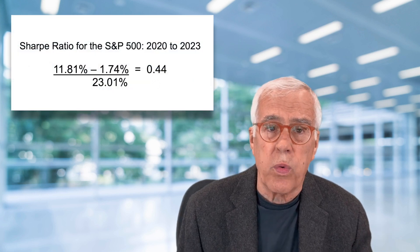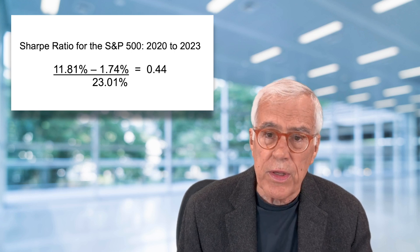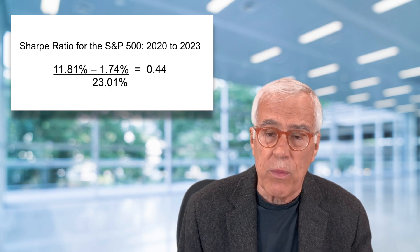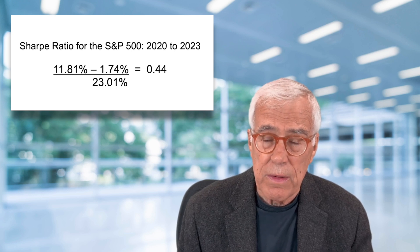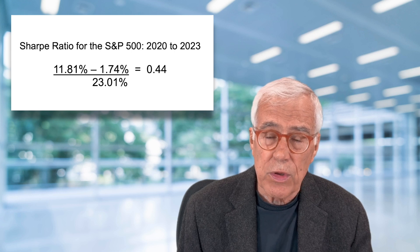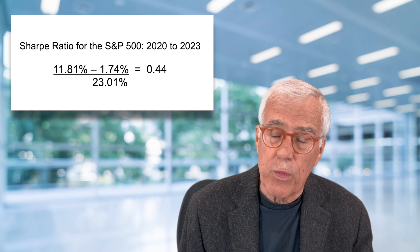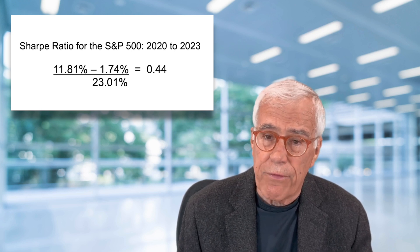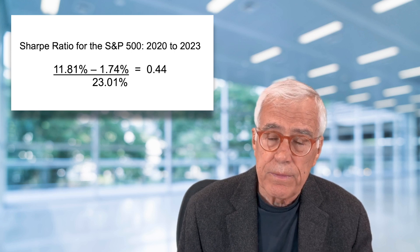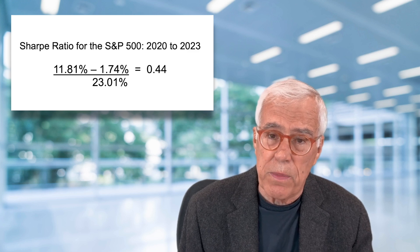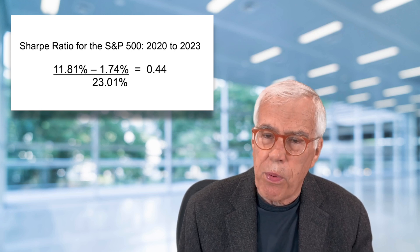That's a lot of talk, so let's do a specific example. Between the beginning of 2020 and the end of 2023, the average return on the S&P 500 was 11.81 percent. The average return on treasury bills was 1.74 percent. So the risk premium — the numerator in the Sharpe Ratio — is the difference between those. And the standard deviation of the returns on the S&P 500 over that four-year period was 23.01 percent. Plug those numbers in and the Sharpe Ratio comes out to be 0.44. What's particularly important is that Sharpe's theory said no portfolio should offer a better Sharpe Ratio than the market portfolio.